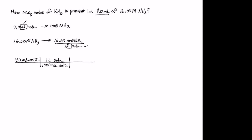Now that I have it in liters of solution, I can use the molarity: 16.00 moles of ammonia per 1 liter of solution. The liters are placed in the denominator so that the unit cancels out, leaving moles of ammonia. Since moles of ammonia is what I wanted to solve for, I'm ready to perform this calculation.